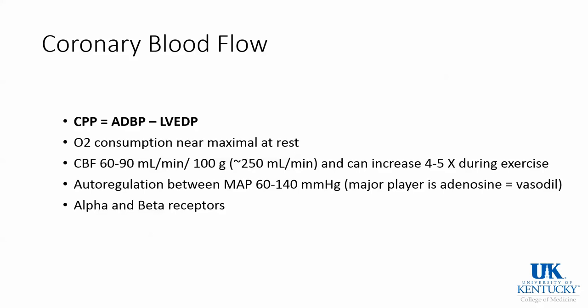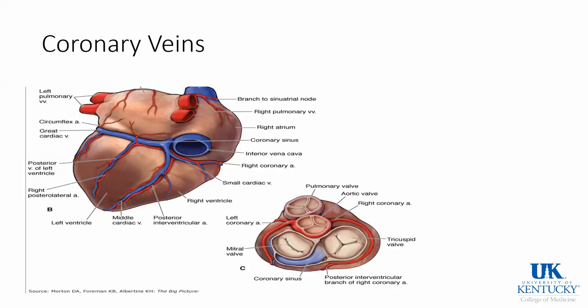Regarding coronary blood flow: blood leaves the sinus of Valsalva and goes to the heart, and the heart tissue extracts oxygen. Normally at rest we consume most of the oxygen the heart receives. The perfusion formula is your aortic diastolic blood pressure minus left ventricular end-diastolic blood pressure. Blood flow is 60 to 90 mL/min and increases during exercise. With ischemia or stenosis you're already extracting a lot of oxygen, so when demand increases it's very easy for the heart to sustain injury.